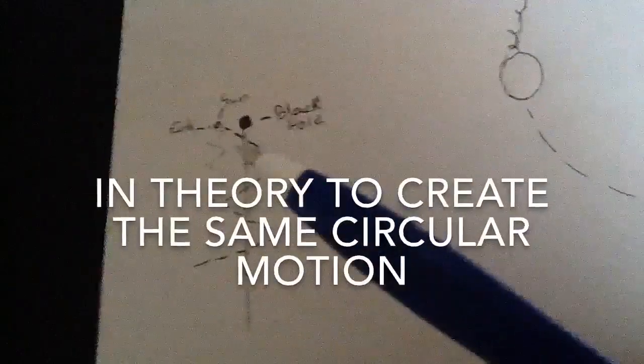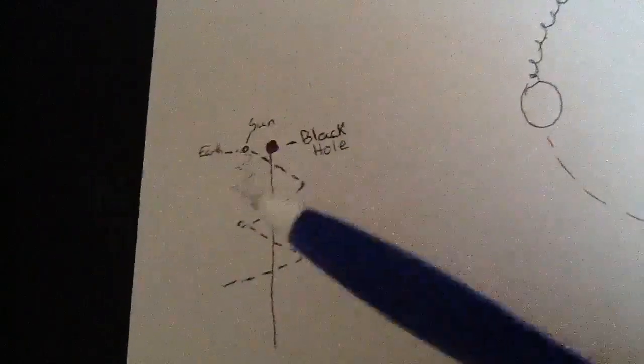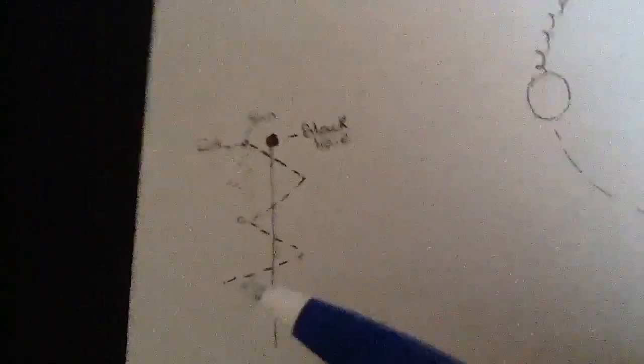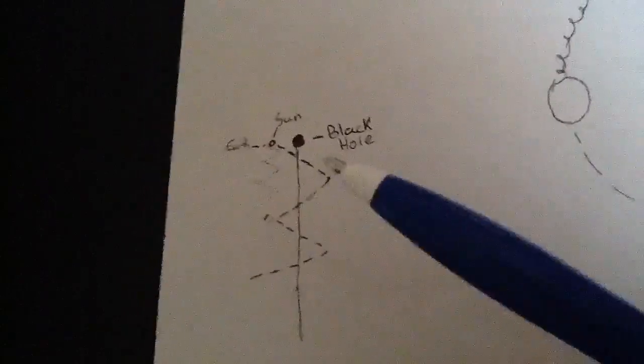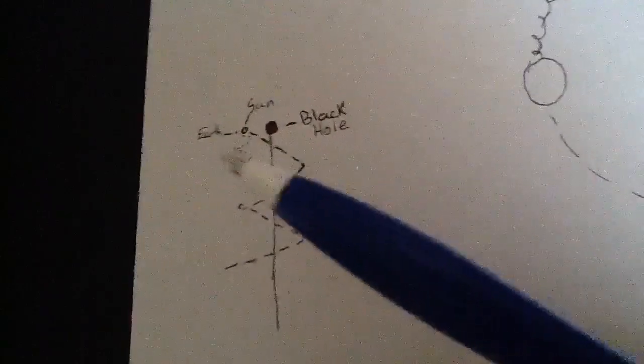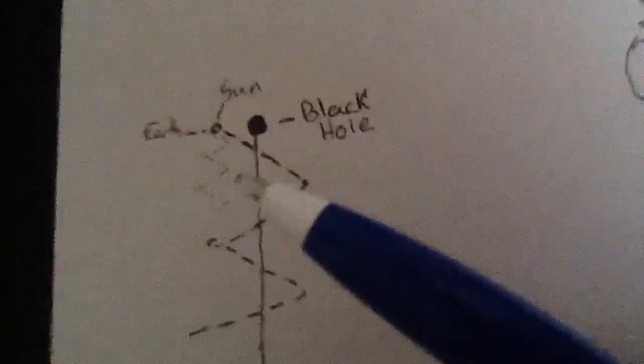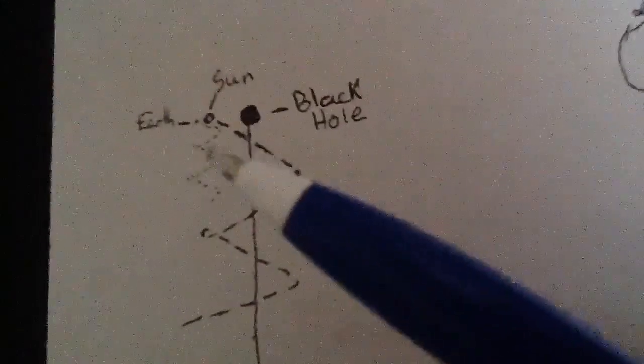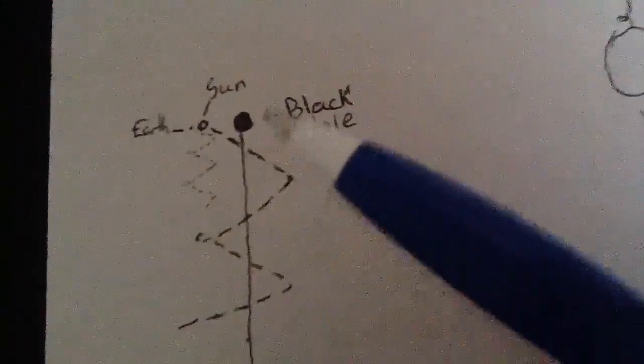Well, I believe that if this is the case, then the black hole actually has to be traveling through space and pulling the sun behind it in the same way that the earth is being pulled by the sun.